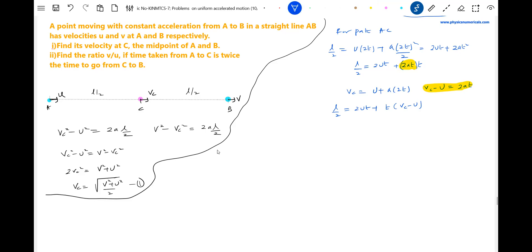After substitution, this will become L by 2 equal to 2ut plus vct minus ut. So one ut gets cancelled. L by 2 equal to ut plus vct, or this will become L by 2 equal to u plus vc into t. This is equation number three, a primary equation.